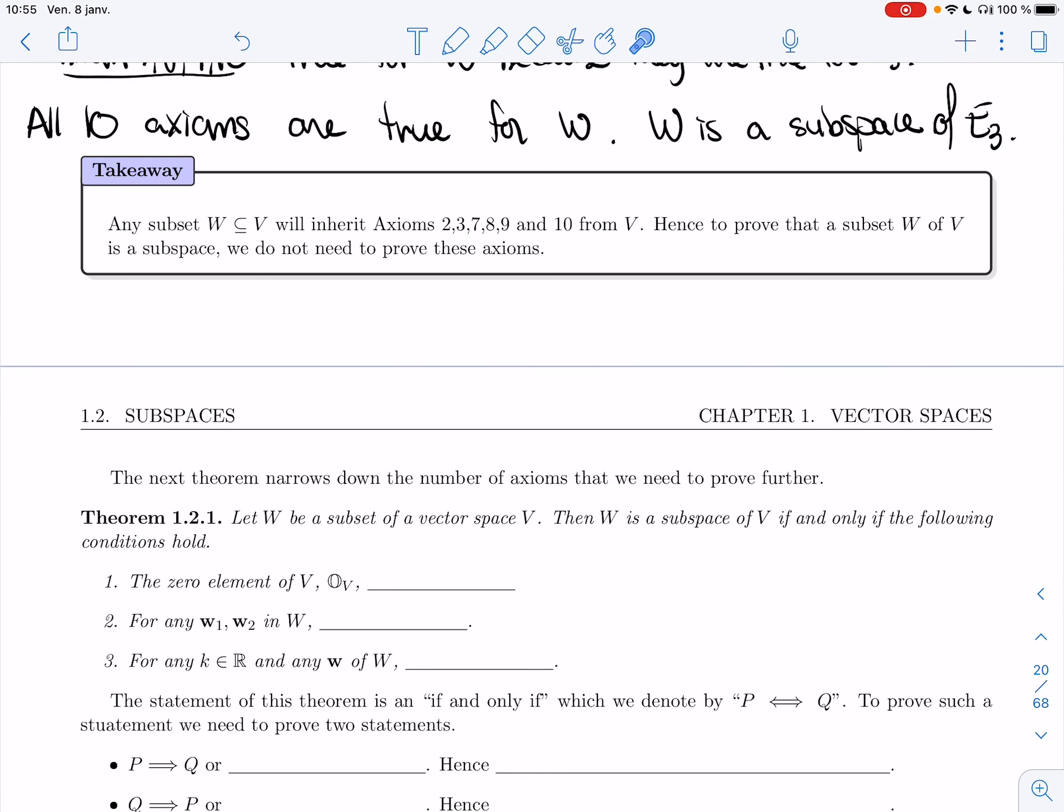Welcome back. In the last video, we saw that any subset W of V will inherit the axioms 2, 3, 7, 8, 9, and 10 from V, so we don't have to prove them when we try to prove that something's a subspace.